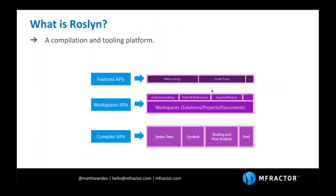Roslyn is essentially a compiler, but more of a compilation tooling platform that exposes the compiler as a series of APIs. From these compiler APIs, we have the workspace API for things like code formatting and finding all references of a symbol. On top of that, we can do rich features such as refactorings and code fixes. This compiler API enables us to build a whole bunch of really useful things that can stand alone from Visual Studio for Mac.